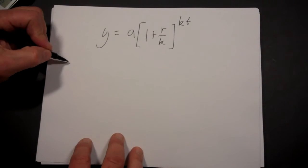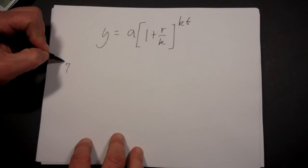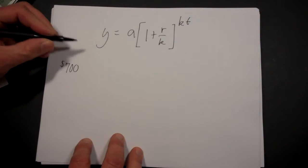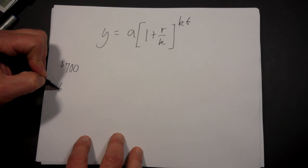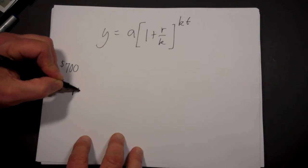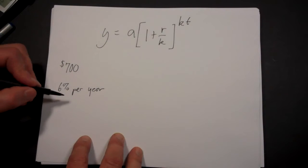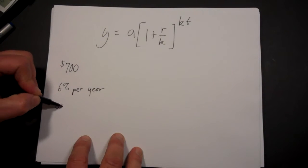So now let's look at a problem. Let's say you have $700, and your interest rate is 6% per year, and it's compounded daily.